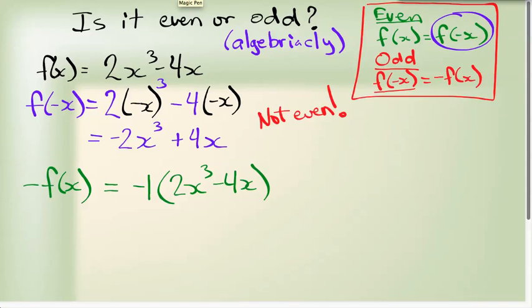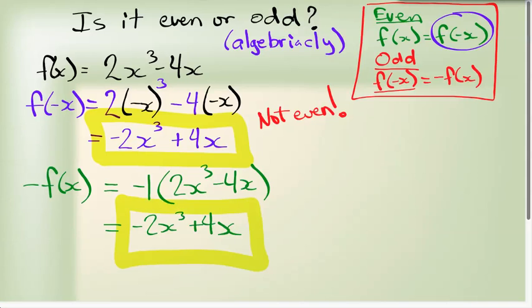So multiply those by a negative, I get minus 2x cubed plus 4x. Now if I look at that, we know these two functions are exactly the same. So f of minus x equals minus f of x, so this function is odd.